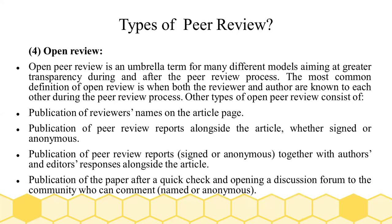In summary, the peer review process involves submitting an article to a reviewer. There are four types: single anonymized, double anonymized, triple anonymized, and open peer review. When authors submit an article, the editor will hand it over to the appropriate reviewer. I hope you liked this lecture — please subscribe and share. Assalamualaikum warahmatullahi wabarakatuh.